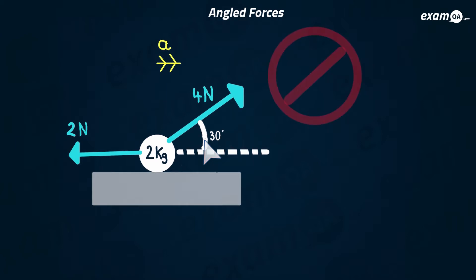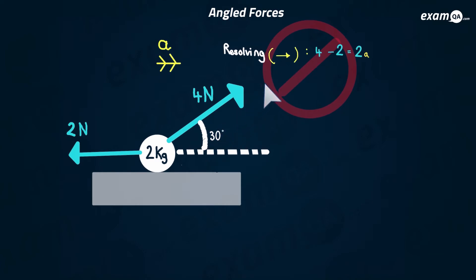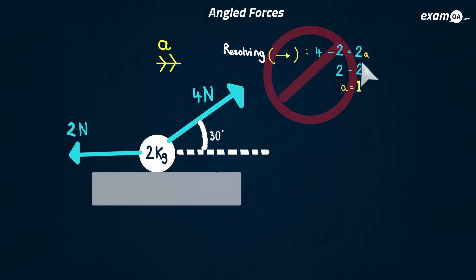This is what you can't do. You can't resolve horizontally and say it's four to the right and two to the left, put this negative since right is positive, and equal that to ma. If you did this and worked out the acceleration as one, it would be wrong. Why is it wrong to say there's four to the right and two to the left?